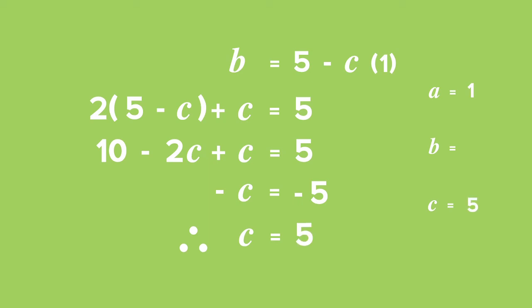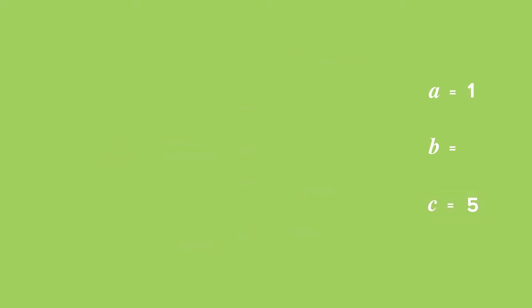Now that we have the value for c, we can work out the value for b by substituting this value of c back into equation 1. We substitute c is equal to 5 back into equation 1. Equation 1 was b is equal to 5 minus c. So therefore, we get b is equal to 5 minus c. Replace the c with 5, and we get that b has a value of 0.